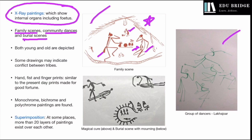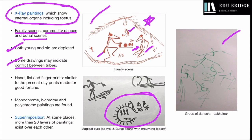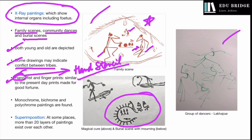Both the young and the old have been depicted equally. Some drawings may also indicate conflict between tribes. Hand and fist and finger prints, similar to present-day prints made for good fortune, have also been found. These hand prints were mostly done using the hand stencil technique, where the hand was placed on the surface and color was blown around it, forming a negative image of the hand. Monochrome, bichrome, and polychrome paintings have been found. Superimposition was also seen, with more than 20 different layers of paintings existing over each other at some places.